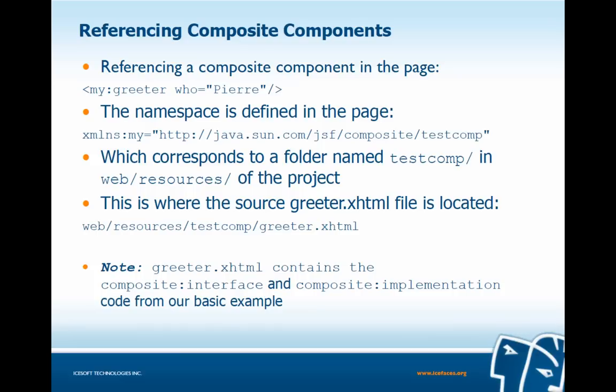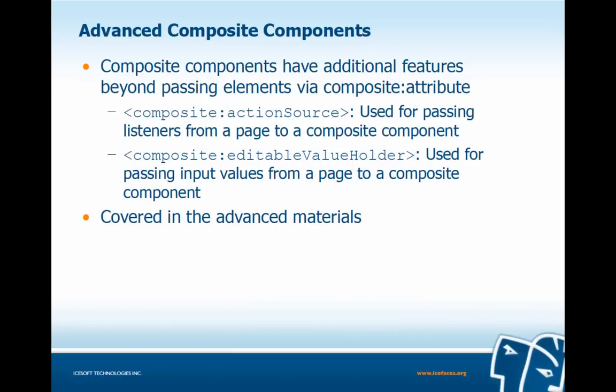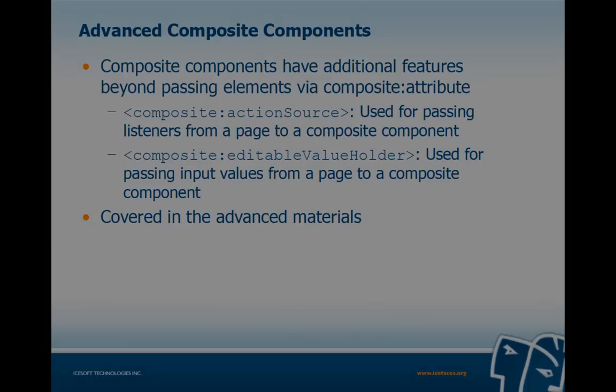We define a namespace in our page — for example, XML namespace 'my' corresponding to a folder 'testcomp' located in our web resources folder. This folder contains greeter.xhtml with the composite interface and composite implementation code. Composite components have additional features: composite action source for passing listeners from a page to a component, and composite editable value holder for passing input values. These advanced features are covered in advanced materials. That concludes our lecture on Facelets composite components.